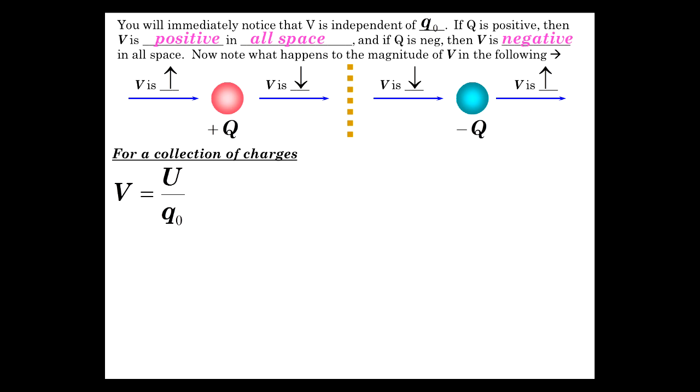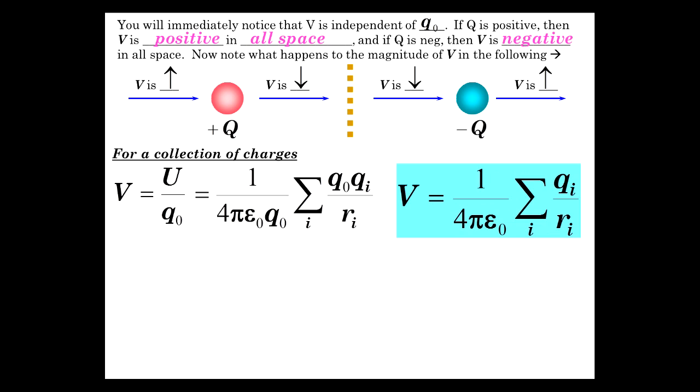Now for a collection of charges, we've already discussed the potential energy of a collection of charges. And since V is energy per charge, now this is going to be the energy of Q0 in association with a multiplicity of charges. So the energy was K, sum of all the Q0, QI over RIs. And so we're just dividing by Q0, and there it is. The Q0 goes away, so we have this simple result that V is equal to K, sum of the QI over RI. So really it's just the sum of all the potentials of however many point charges we have.